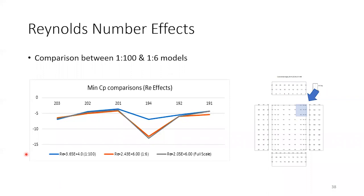Regarding Reynolds number effects, comparing the 1:100 and 1:6 scales at three different Reynolds numbers shows that for critical locations under conical vortices on the roof, Reynolds number has a measurable effect. The PTS-corrected values from the larger-scale tests — which correspond to higher Reynolds numbers — show very good agreement with full-scale data, confirming that larger model scales with PTS correction provide both the turbulence correction and the Reynolds number benefit needed to match full-scale results.